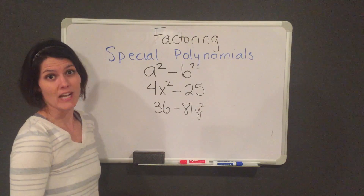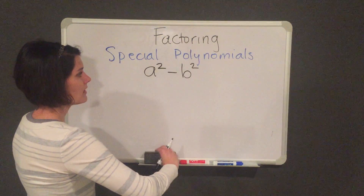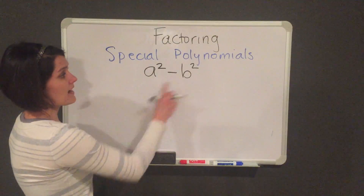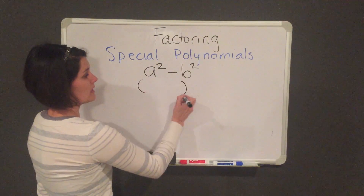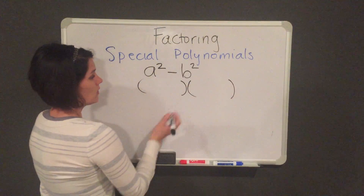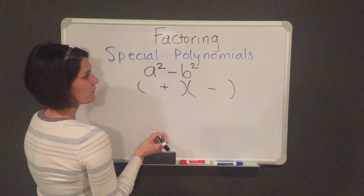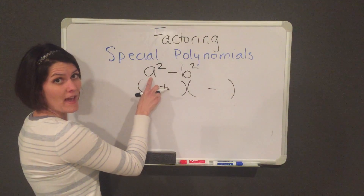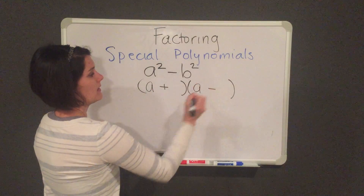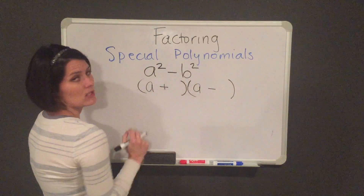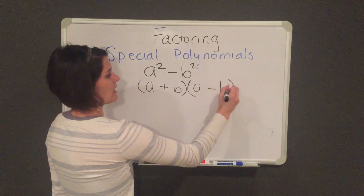So let's learn how to factor these. To factor a difference of two squares, you open two parentheses — one is a positive, one is a negative. You take the square root of a and put it in the first space, then you take the square root of b and put it in your second space.